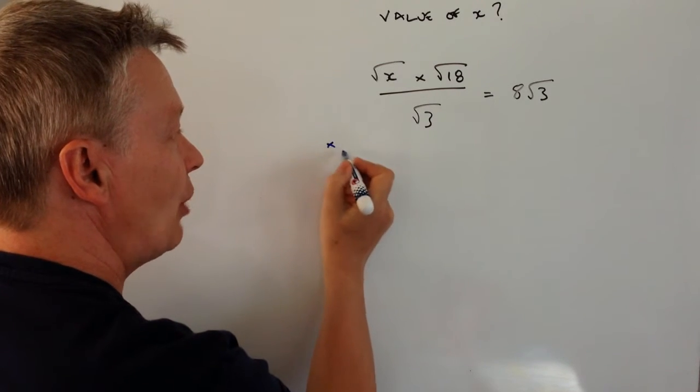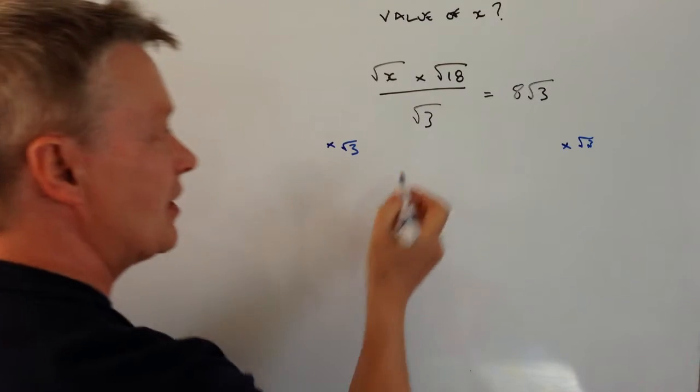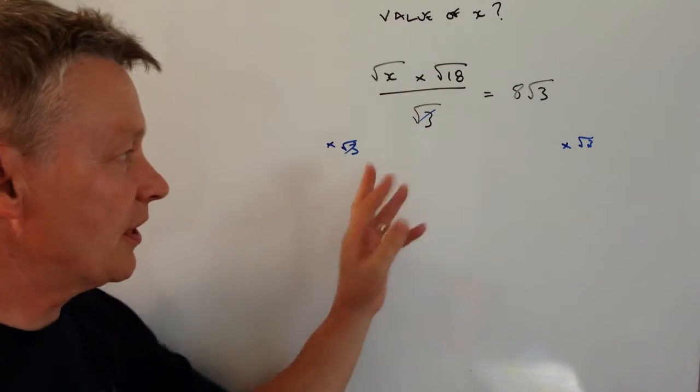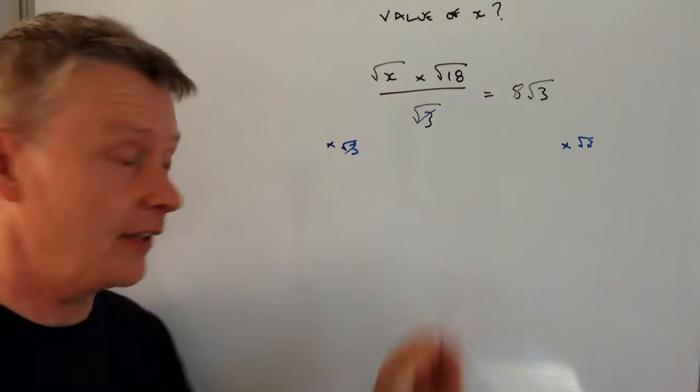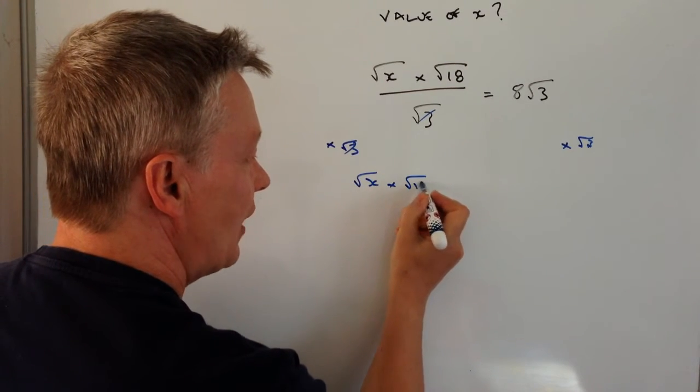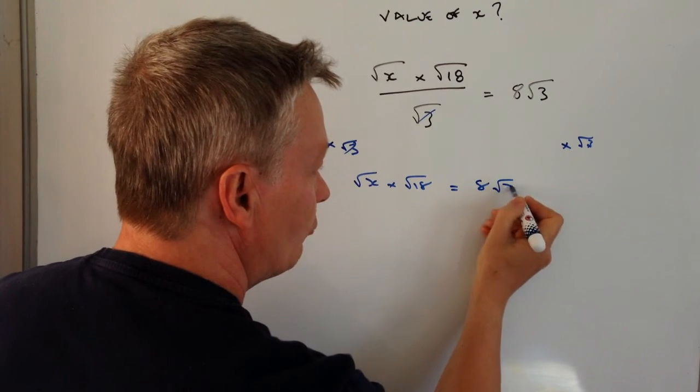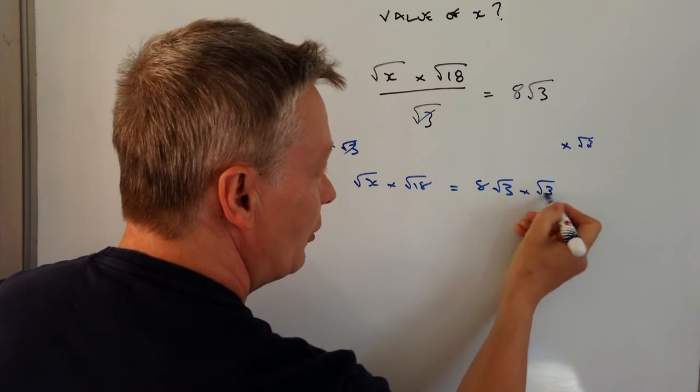So if I multiply both sides by root 3, what I end up with is losing this side altogether. So on the left hand side of the equation I end up with root x times root 18 and that's going to equal 8 times root 3 times root 3 again.